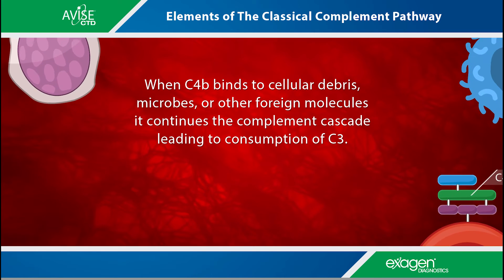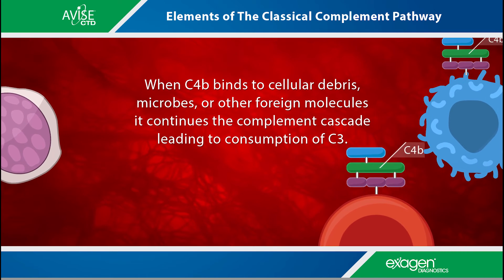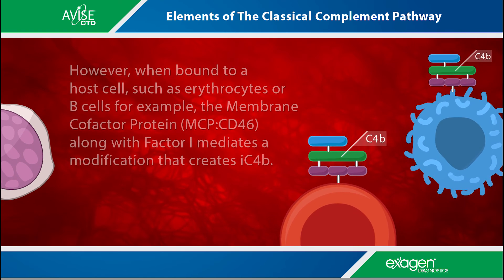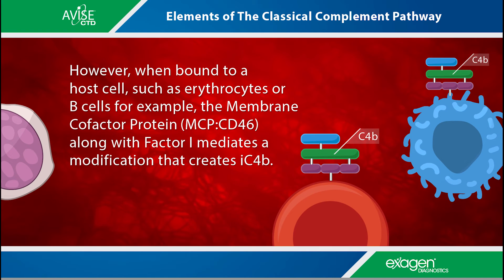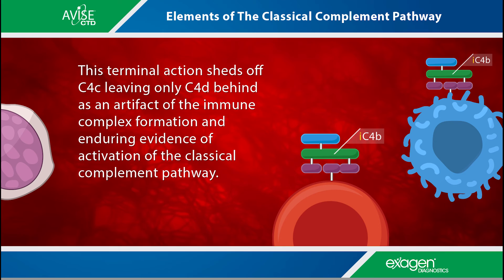C4B is left to bind to circulating molecules in the vicinity. When C4B binds to cellular debris, microbes, or other foreign molecules, it continues the complement cascade leading to consumption of C3. However, when bound to a host cell such as erythrocytes or B cells, the membrane cofactor protein MCP or CD46, along with factor I, mediates a modification that creates iC4B.